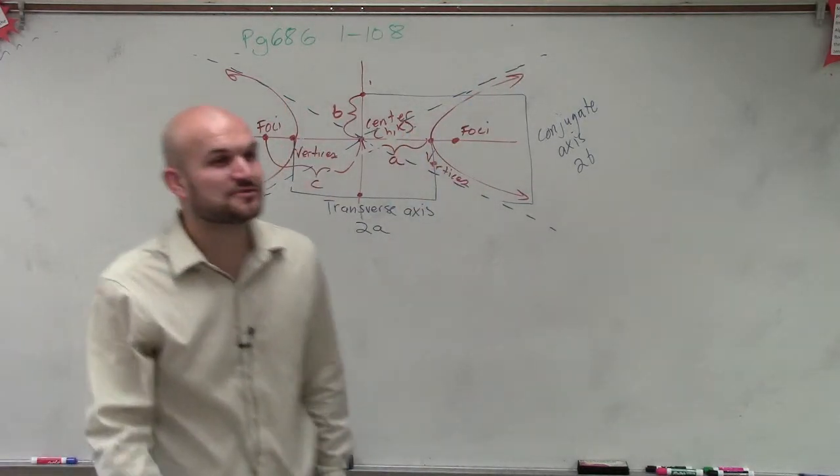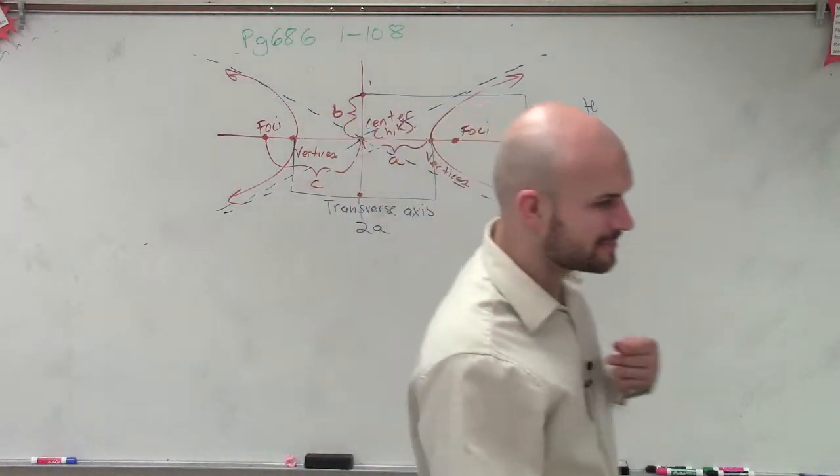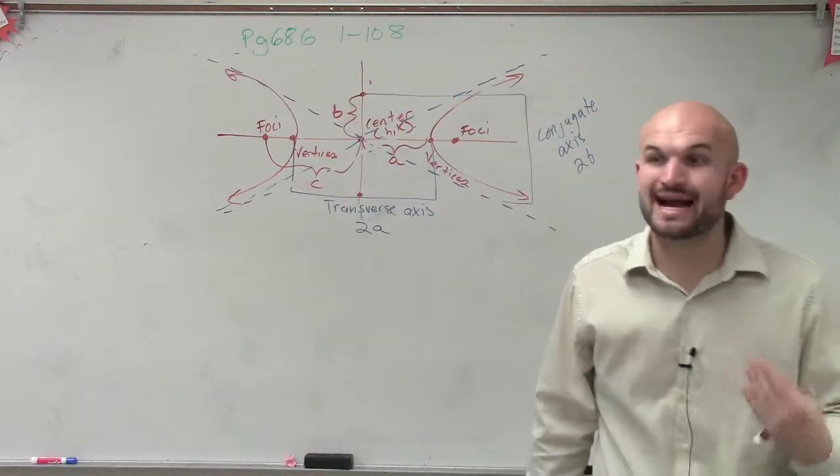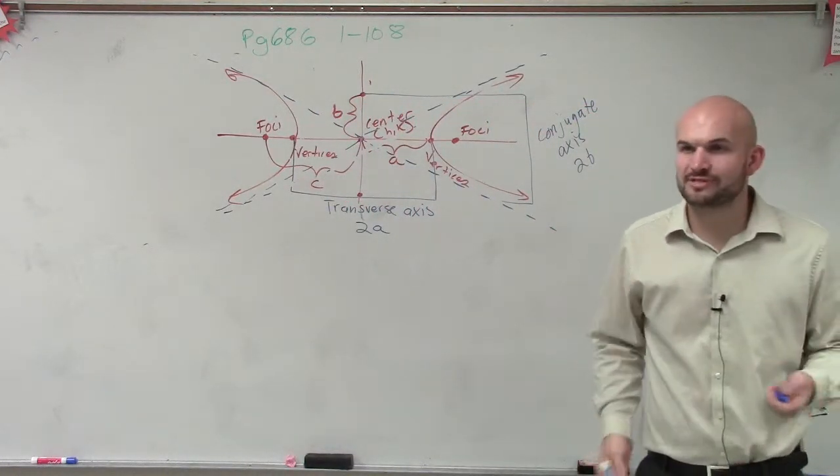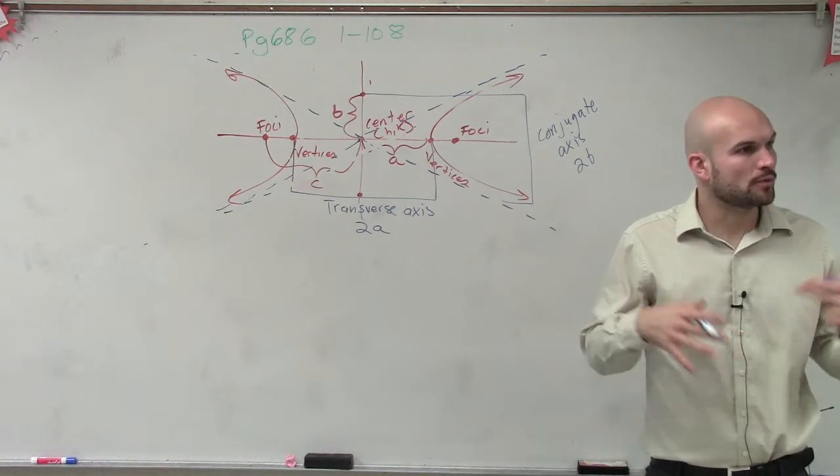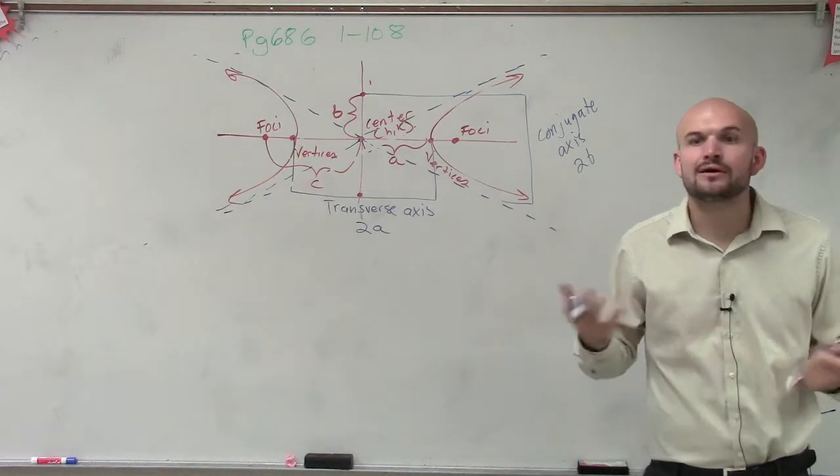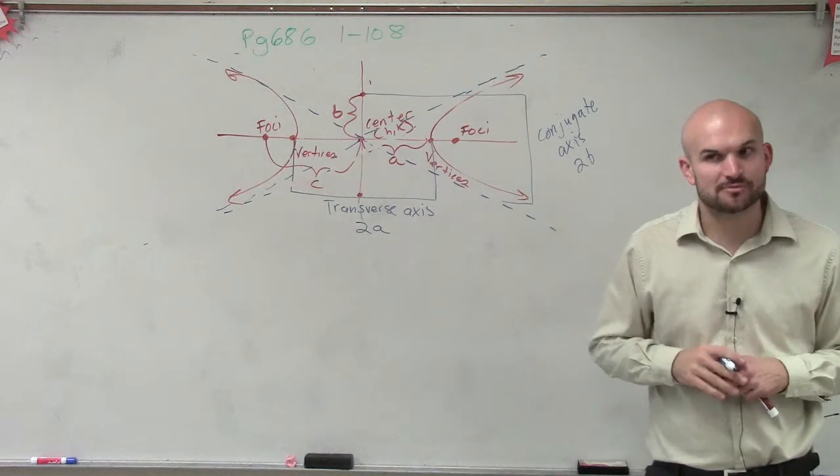If you guys remember our dotted lines for chapter 9, we had our dotted lines, we used them to apply to asymptotes, where your graph is going to approach. Well, guess what? These are your asymptotes as well.